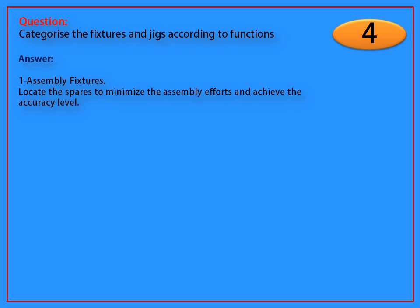Answer: Assembly fixtures locate the spares to minimize the assembly efforts and achieve the accuracy level. Machining fixtures lock the degrees of freedom and guide cutting tools for intended function.